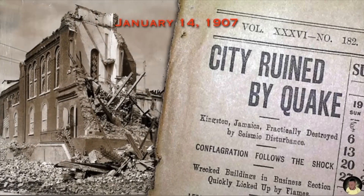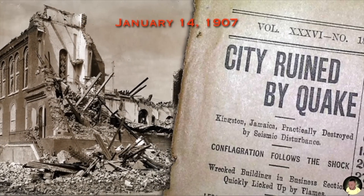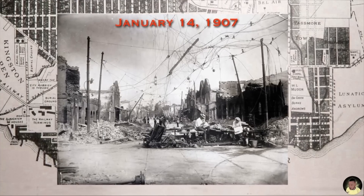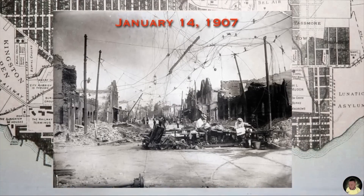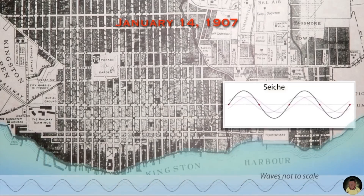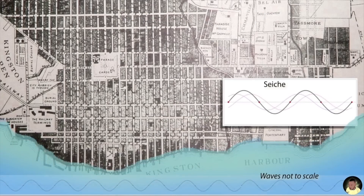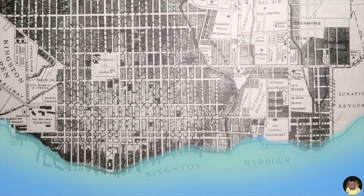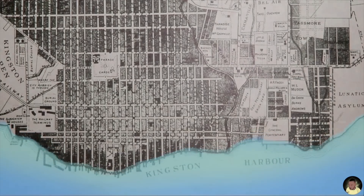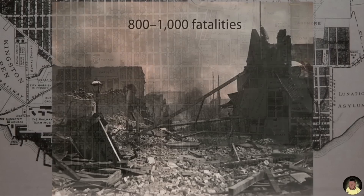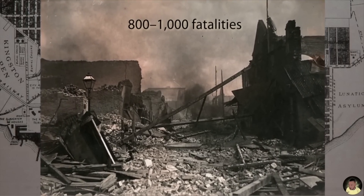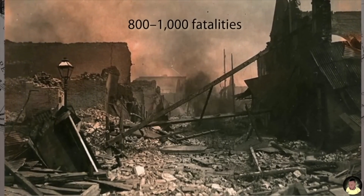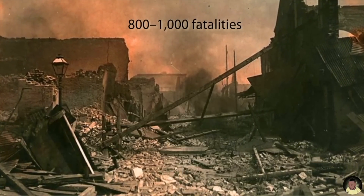The greatest intensity of ground shaking, liquefaction, and damage occurred in the business and harbour district, where over 80% of buildings were destroyed. In addition to destruction from ground shaking, seiches or standing waves occurred in Kingston Harbour, resulting in seawater inundating areas near the shoreline. Tsunamis, likely caused by submarine landslides that severed communication cables, reached 2 meters height on northern shores. This earthquake caused 800 to 1,000 fatalities.